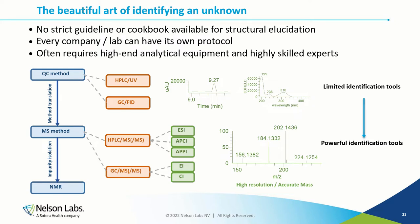However, if MS is inconclusive, you can go to NMR, which is a powerful alternative identification technique. But in general, NMR is less sensitive compared to mass spectrometry. It is also not straightforward when an impurity is present in a complex matrix, so it might be required to isolate and up-concentrate the impurity of interest. This process can be rather laborious, time-consuming, and costly, so it's not always freely available.